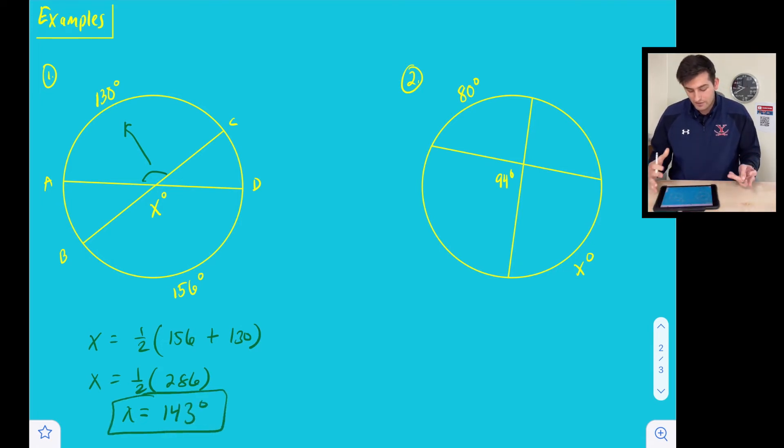Now for number two, we have to apply a little bit here. We're not exactly given everything that we need, so we want to find out what X is once again, but to do that, we need to know what these two angle measures are.